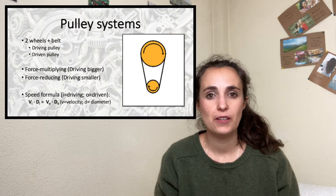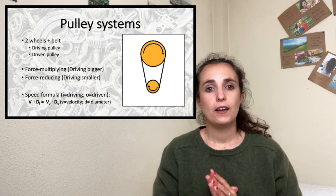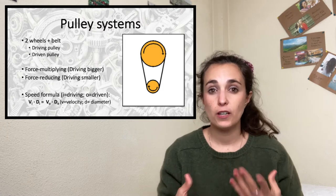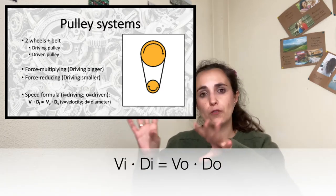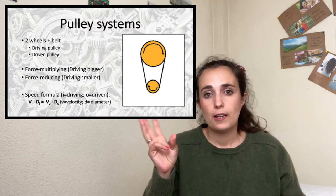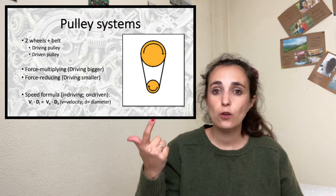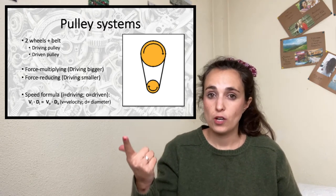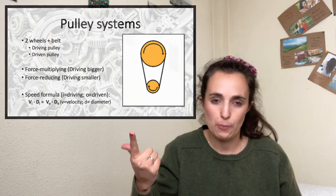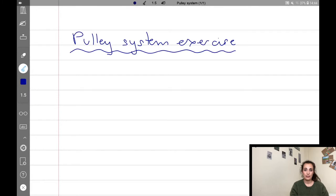Even if it is a bit complicated, there is a speed formula to calculate the speed of each of the pulleys. To calculate this, you need at least three pieces of data: the diameter of both pulleys and also the velocity of the driving one, or at least the velocity of one of the pulleys. I'm going to show you an example of a pulley system where we have to calculate the velocity of one of the pulleys.